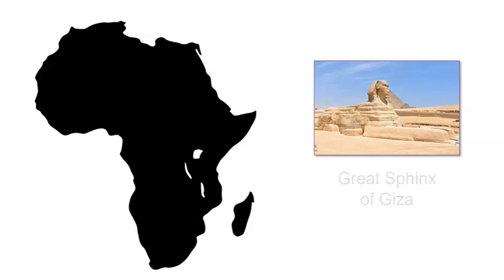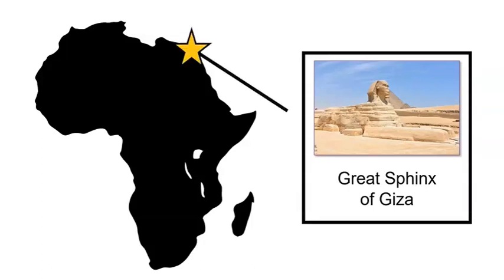This picture shows a giant statue called the Great Sphinx of Giza. The Sphinx is located near Cairo in Egypt. A long time ago, people carved the Sphinx out of limestone.